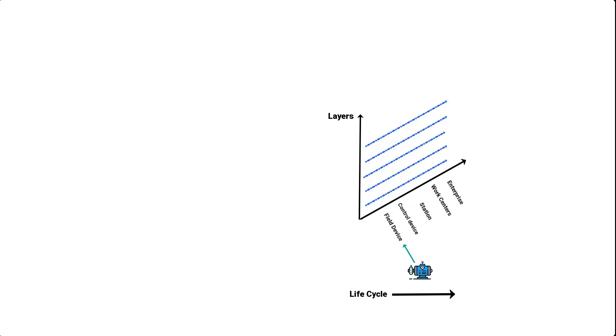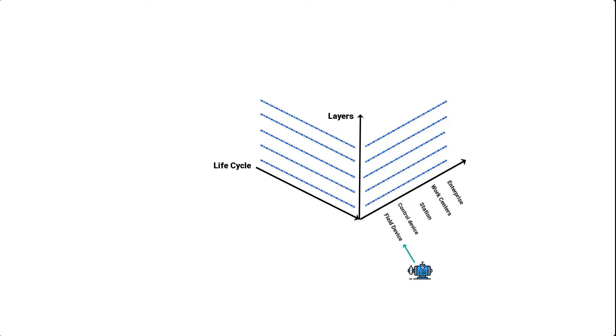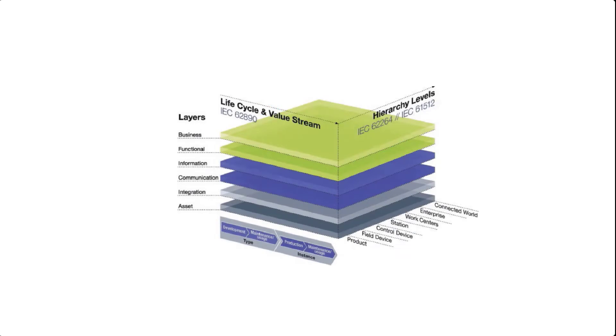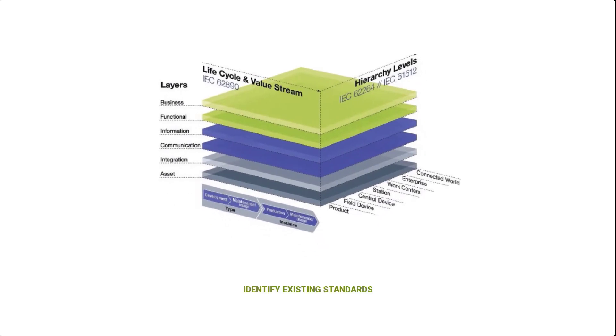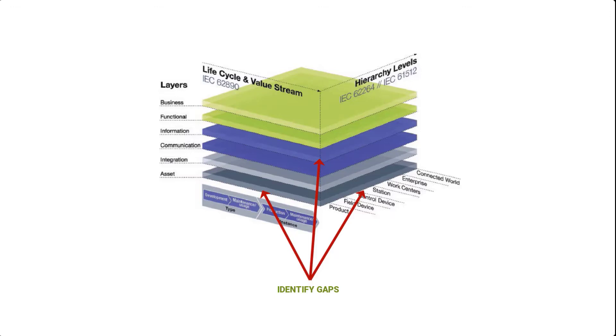Similarly, each component in a manufacturing facility goes through a life cycle, from the time it is a simple idea, to its creation, commissioning, usage, and decommissioning. We also need to capture that life cycle and the value streams of each component along the way, eventually ending up with a 3D model. Such a model should enable us to identify existing standards for each layer on each axis, identify gaps where there are no existing standards, close loopholes in existing standards, and also identify overlaps in existing standards.